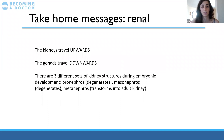The take-home messages for the renal system: the kidneys travel upwards and the gonads travel downwards. There are three different sets of kidney structures — the pronephros that degenerates, the mesonephros that degenerates as well, and the metanephros that transforms into the adult kidney.